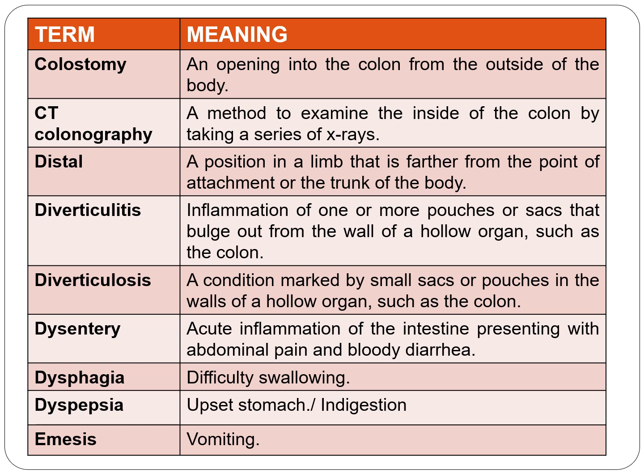Diverticulosis is a condition marked by small sacs or pouches in the walls of hollow organs such as the colon. Next is dysentery — acute inflammation of the intestine presenting with abdominal pain and bloody diarrhea. Next is dysphagia — difficulty in swallowing. 'Phagia' means swallowing, 'dys' means difficulty.